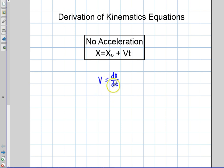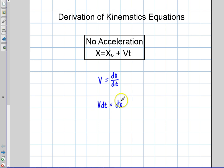Now what I'm going to do is solve for position here. I'm going to have to separate these variables. So the first thing I'm going to do is write velocity times dt, and that's going to equal dx. So velocity times dt equals dx. The next thing I'm going to do is integrate both sides of this equation.